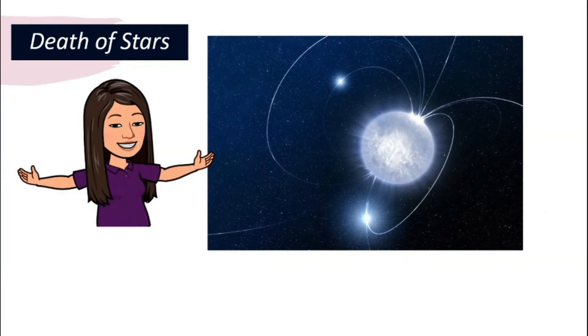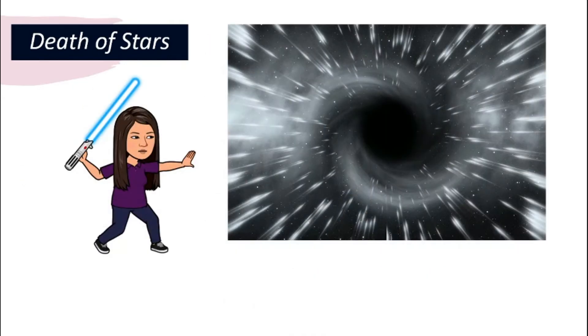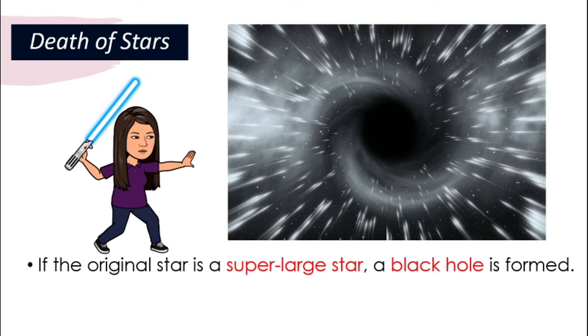After supernova, what happens? If the original star is large, then a neutron star will be formed after supernova. But if the original star is not only large but super large, no neutron star will be formed but a black hole will start to form.